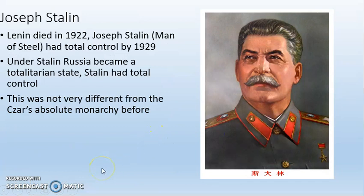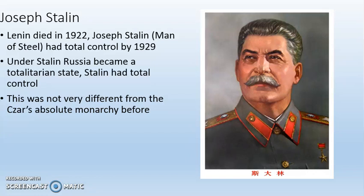Lenin is going to die in 1922 — he was not in charge for very long. He was replaced by Joseph Stalin. Stalin means man of steel. Joseph Stalin had total control of Russia by 1929 and was going to be around for a long time, into the mid-1950s. So not only did he experience World War I, but he made it through all of World War II. He ultimately brought the atom bomb to the Soviet Union, but that's a little bit later.